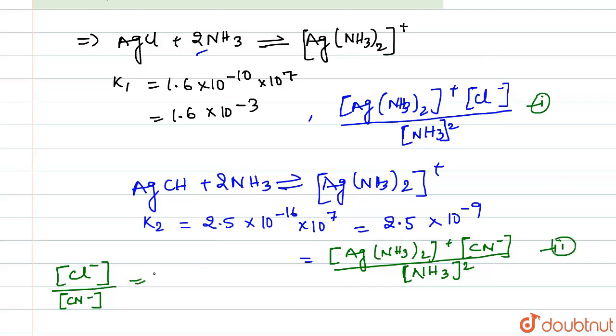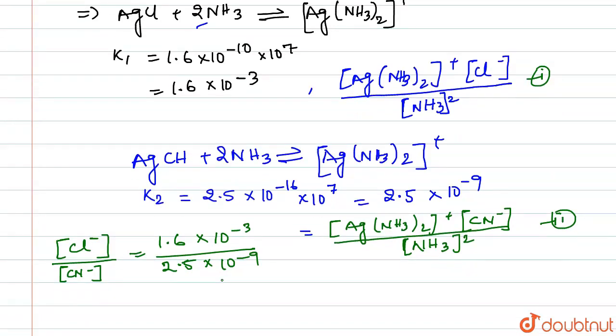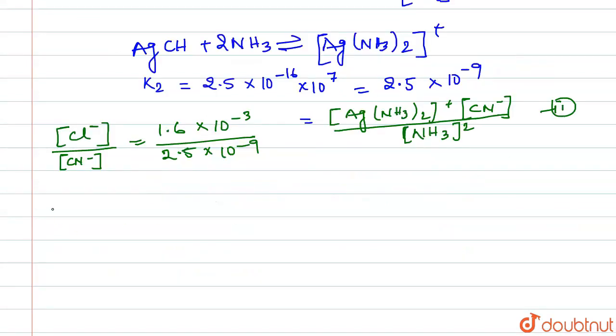From here what we can conclude is, because these two got cancelled out, this will be equal to 1.6 into 10 to the power minus 3 divided by 2.5 into 10 to the power minus 9. From 1 and 2 we have this result. The value for this will be 6.4 into 10 to the power 5.